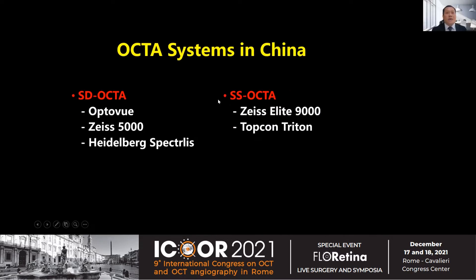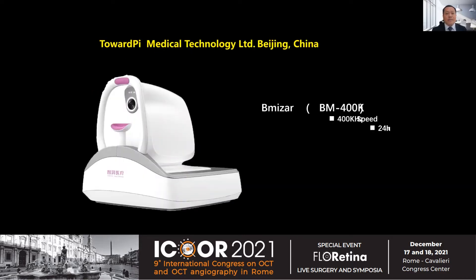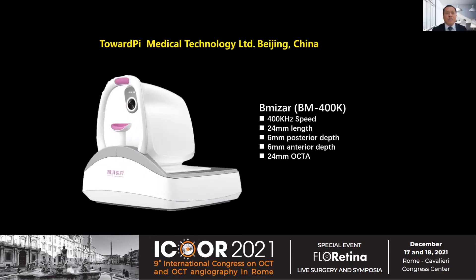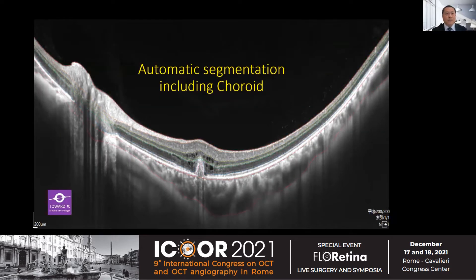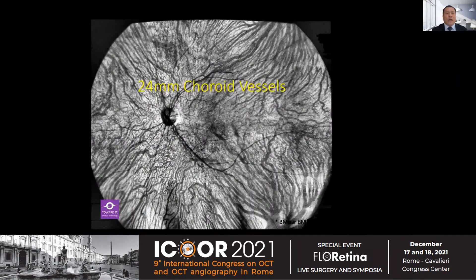These are the main OCTA systems that we use in China. Today, I would like to introduce a new OCTA system developed and manufactured by TwardPi Medical Technology Ltd. in China. It has fantastic features that other systems don't have. This is a 24-millimeter-length OCT B-scan with 6-millimeter depth. Its automatic segmentation, including choroid, has been developed very well. We can capture 24-millimeter retinal flow in one scan as well as visualization of the choroidal vessels.